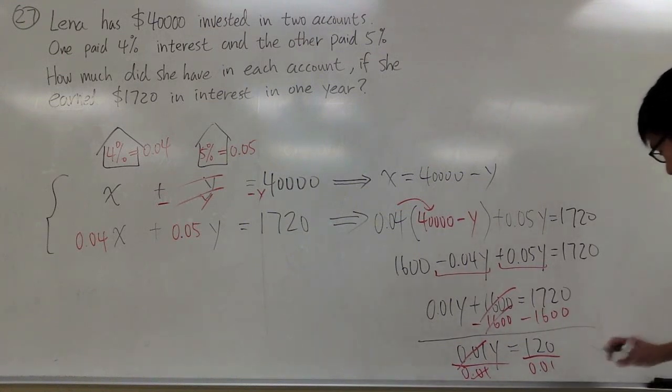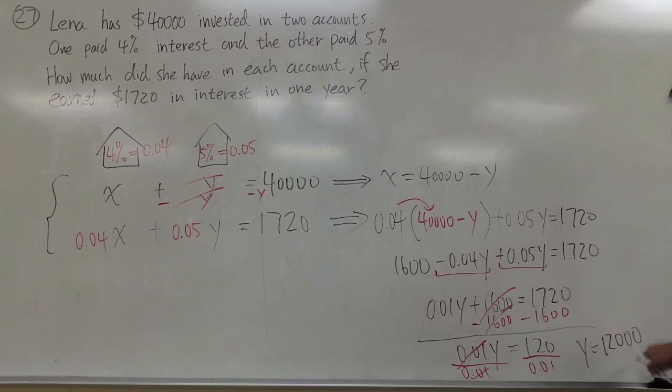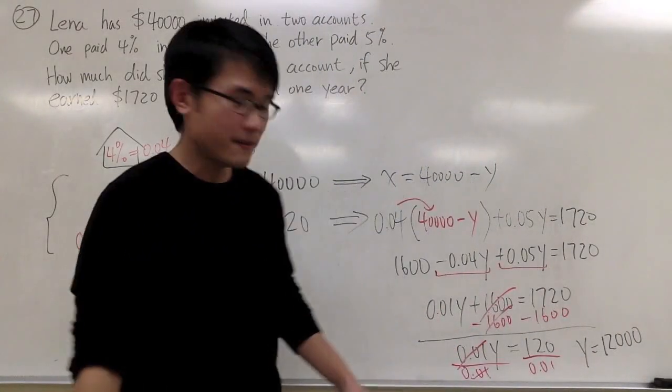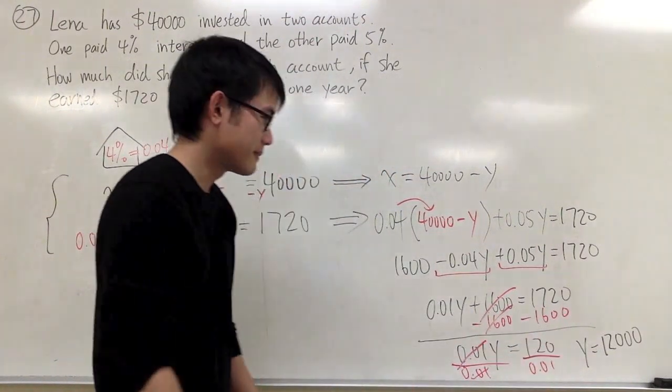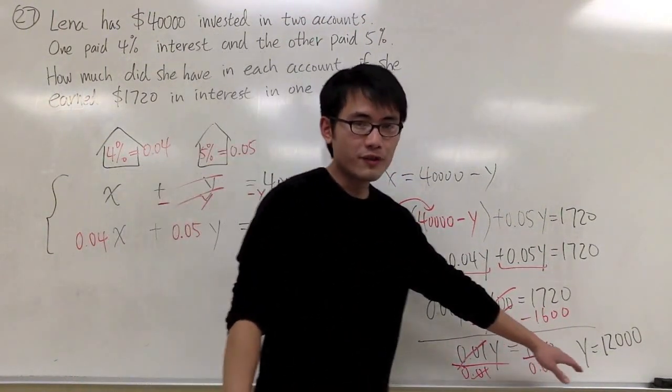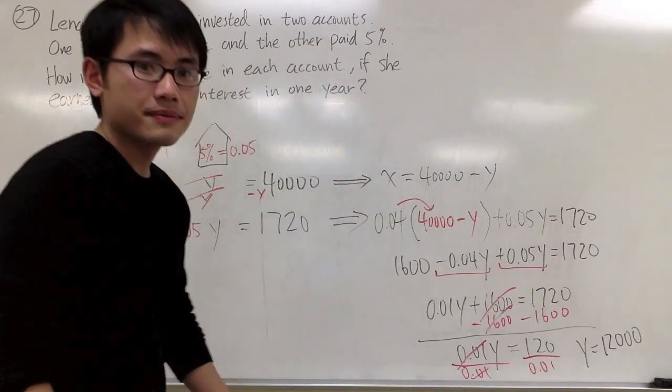I get y is equal to, divide this, you get 120, 12,000 like this. If you just divide 120 by 0.01, you get 12,000. So this is one of my answers, y is equal to 12,000.